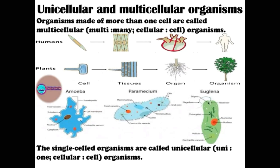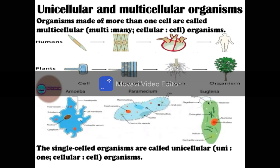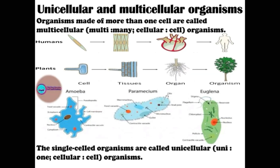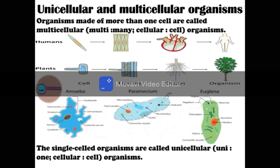Group of cells forms tissues and tissue forms an organ. Multicellular organisms begin life as a single cell, which is the fertilized egg. The fertilized egg cell multiplies and the number of cells increases. However, single-cell organisms perform all the necessary functions that multicellular organisms perform — for example, amoeba can capture and digest food, respire, excrete, grow, and reproduce.